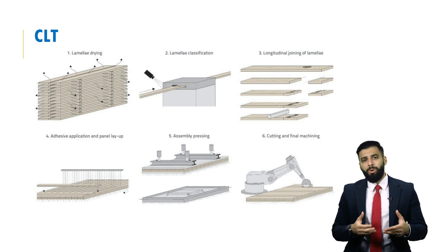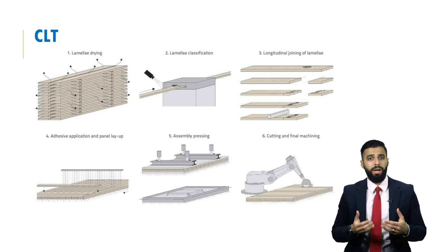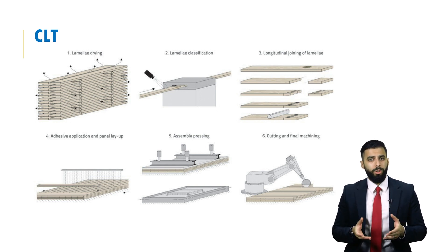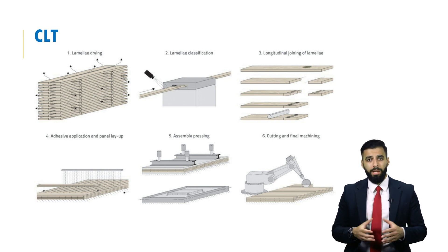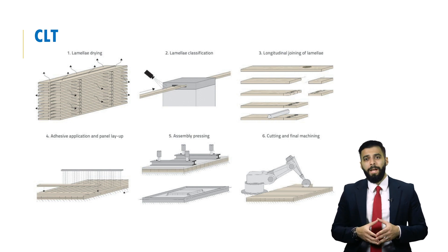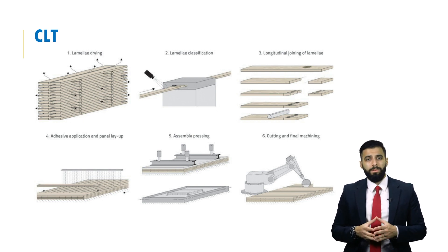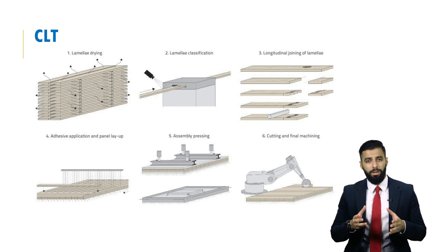The point of alternating layer directions is that it allows walls and floors made from CLT to carry higher loads. In terms of the manufacturing process, the material first needs to be prepared by drying the lamellae, classifying them based on strength and grain direction, joining them using finger joints, and then gluing them together as shown in the final stages on screen.